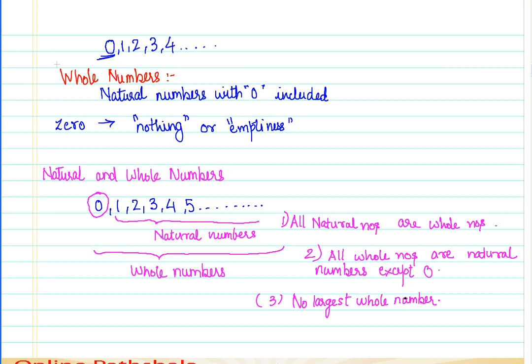Remember that the successor and predecessor rule applies to whole numbers. However, in the whole number system, the number 1 has a predecessor and that predecessor is 0. In the whole number system, 0 has a successor which is 1 but it doesn't have any predecessor. So in whole numbers, 0 has no predecessor.